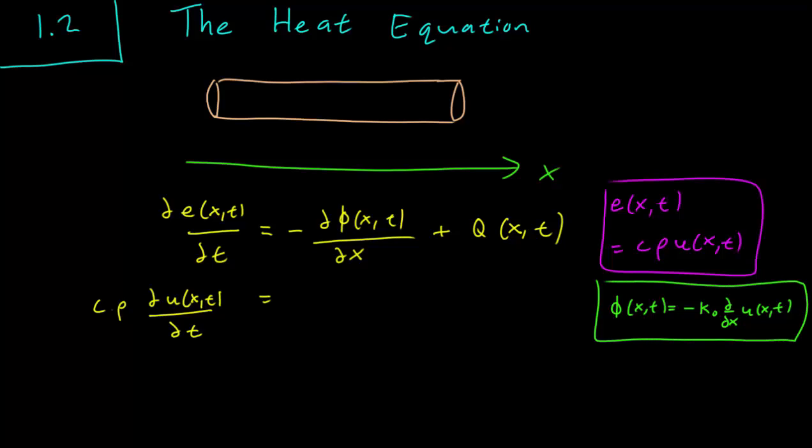This is Fourier's law. And we simply use it to replace the phi on the right hand side with our u. So here we have minus the partial derivative of minus k_0 partial partial x u(x,t) differentiated with respect to x and the Q(x,t) of course remains the same.